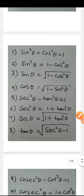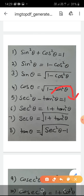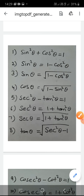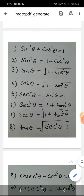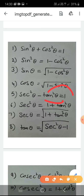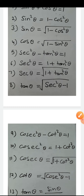From the second identity — sec²θ - tan²θ = 1 — shifting tan²θ to the right: sec²θ = 1 + tan²θ. Taking square root: sec θ = √(1 + tan²θ). Another identity: shifting sec²θ and 1 — tan²θ comes positive and 1 goes negative: sec²θ - 1 = tan²θ. Taking square root on both sides: tan θ = √(sec²θ - 1).